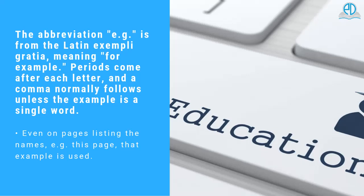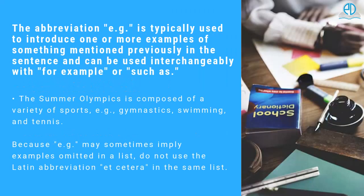Periods come after each letter, and a comma normally follows unless the example is a single word. Even on pages listing the names, e.g. this page, that example is used. The abbreviation e.g. is typically used to introduce one or more examples of something mentioned previously in the sentence,